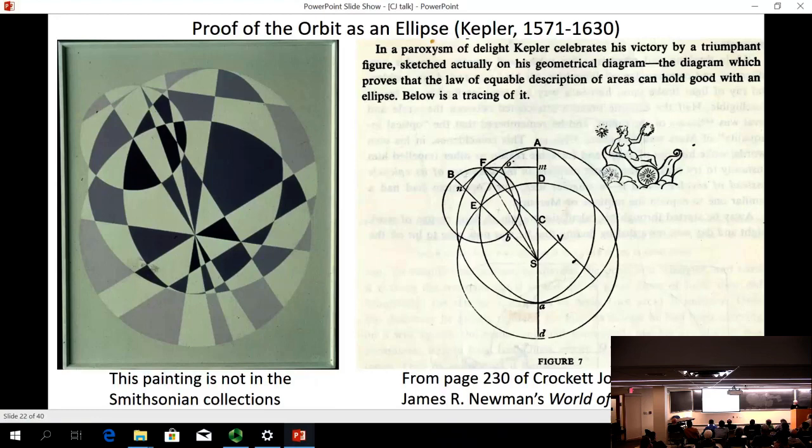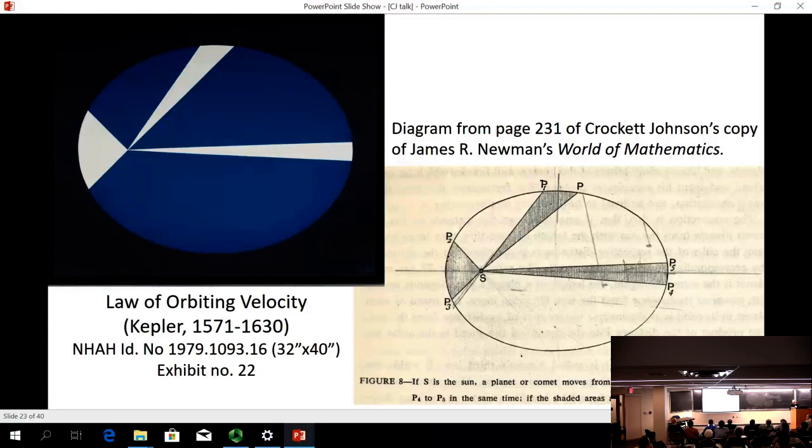Then we have one that clearly does show the diagram, and this is the modern statement of the second law, that a line connecting the sun and any planet sweeps out equal area in equal time. The painting illustrates that law with the white areas being shown in white, and those are the ones that are equal. A consequence of the law is that the planet is moving faster when it's closest to the sun and slowest when it's furthest from the sun.